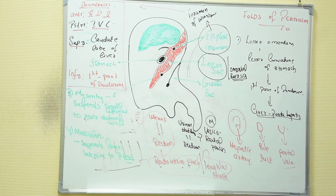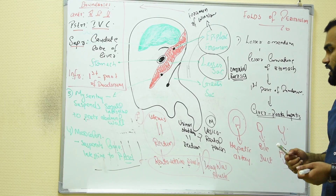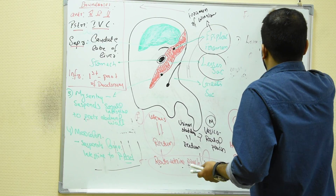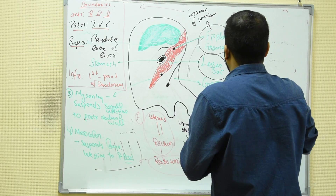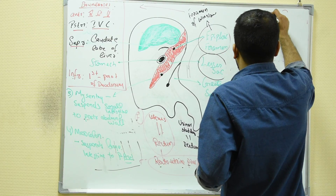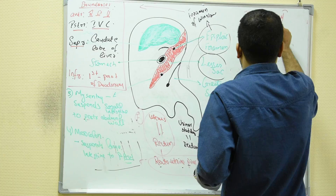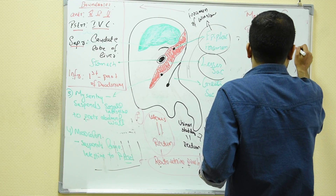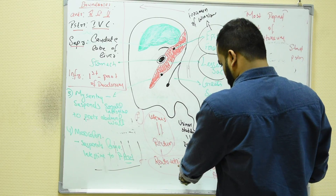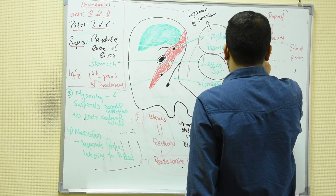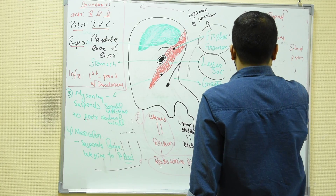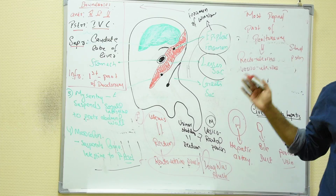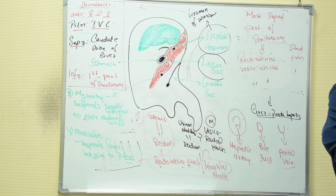An important MCQ point: the most dependent part of the peritoneum in the standing position. In females, it is the rectouterine pouch, also called the Pouch of Douglas. In males, it is the vesico-rectal pouch.